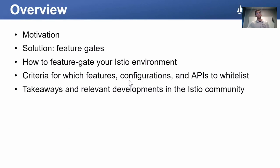Just an overview of what I plan on covering here. First, I wanted to talk about the general problem we're trying to solve, and why Feature Gates are the solution to that problem. Then, I'll cover how you could go about Feature Gating your environment and establishing these guardrails, and also touch on some criteria to help you decide which features to allow or disallow. Finally, I'll reiterate the primary takeaways, and touch on some relevant developments in the Istio community.